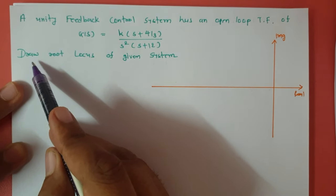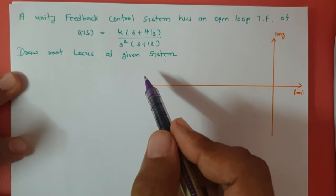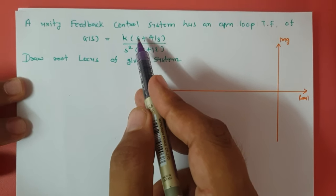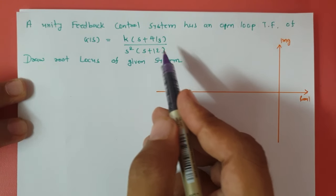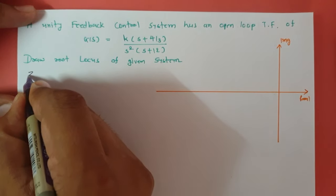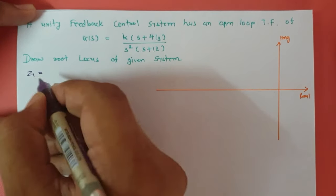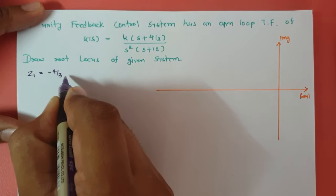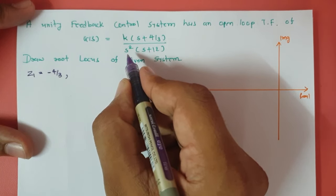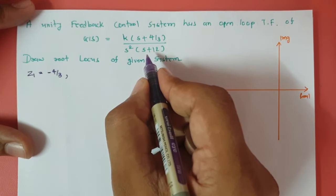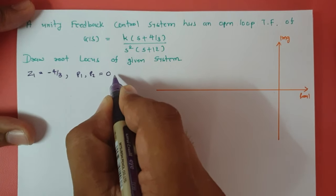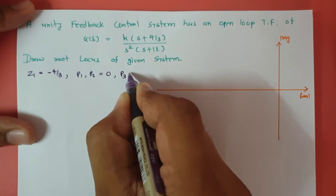We are asked to draw the root locus of this system. When you want to plot root locus of any system, first you will have to identify the location of poles and zeros. The numerator explains zeros and the denominator explains poles. There is one zero at s = -4/3, and there are three poles: two poles P1 and P2 at s = 0, and one pole P3 at s = -12.